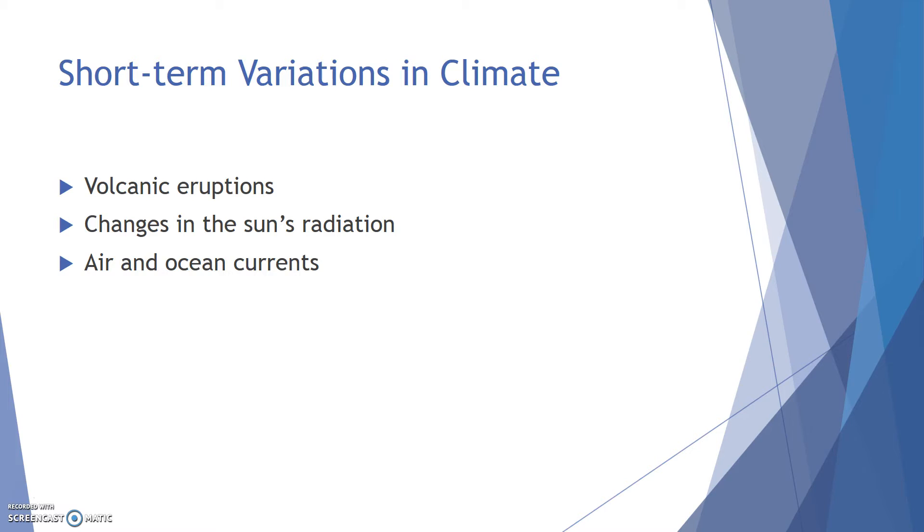Lastly, changes in air and ocean currents do occur regularly, and these can have short-term variations in climate. They can be short-term things like tsunamis or hurricanes. A famous shift in air and ocean currents is what we call El Nino. It's a periodic shift in Pacific winds and ocean currents, and it causes places like the west coast of South Africa to receive warmer, wetter weather. You can see that in the pictures that are in your notes.